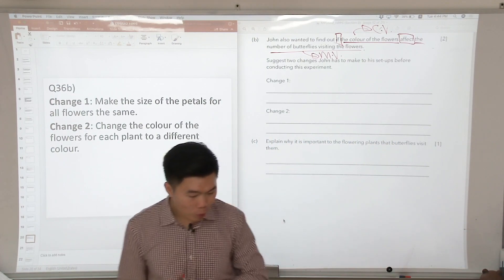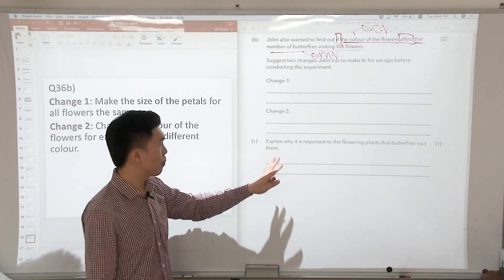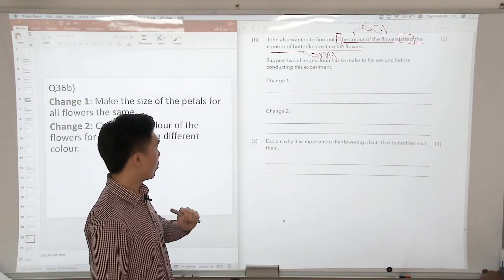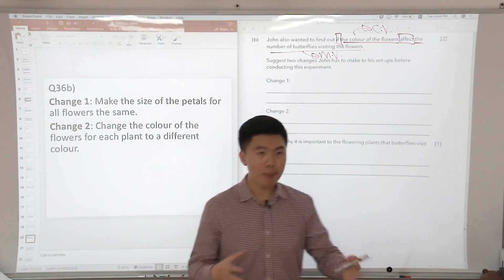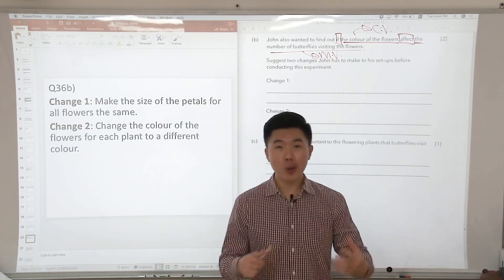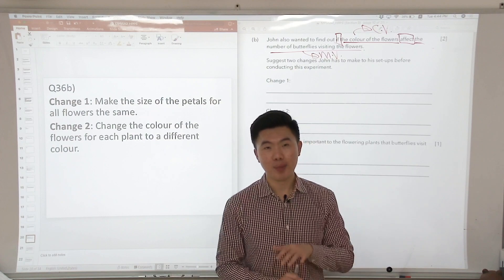Now let's look at C. Explain why it is important for flowering plants that the butterflies visit them. What are butterflies? We always say that butterflies are known as pollinators. So what exactly are pollinators?